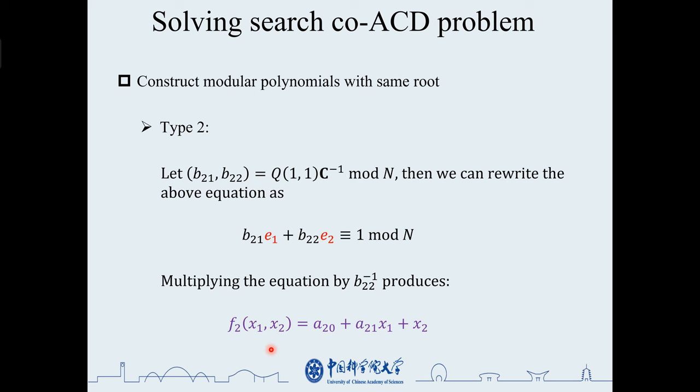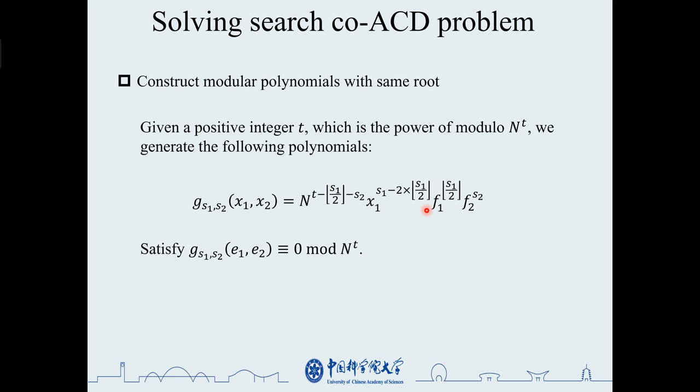We use f1 and f2 to construct the set of polynomials g with the same roots modulo the t-th power of n. Clearly, their roots are e1 and e2. The n part is to ensure that the equation mod the t-th power of n is 0, and the x1 part is to ensure that the constructed matrix is lower triangular.